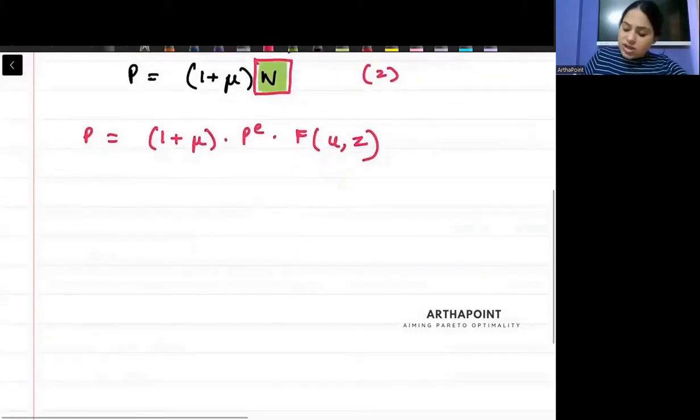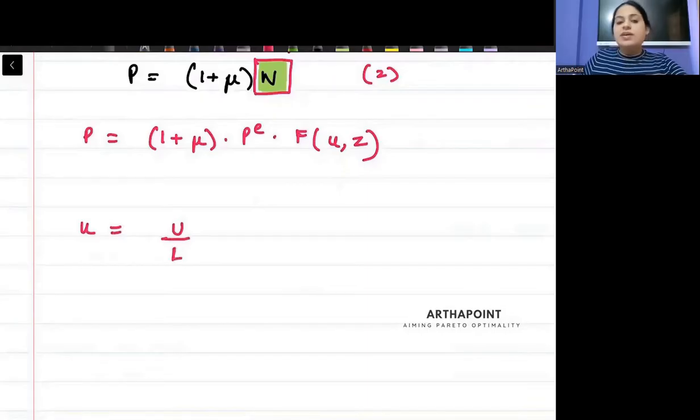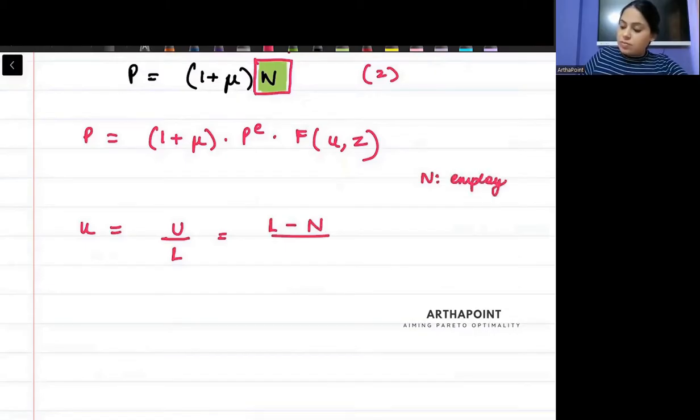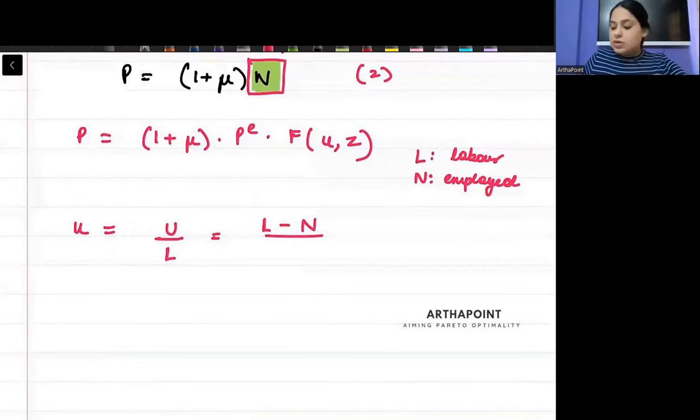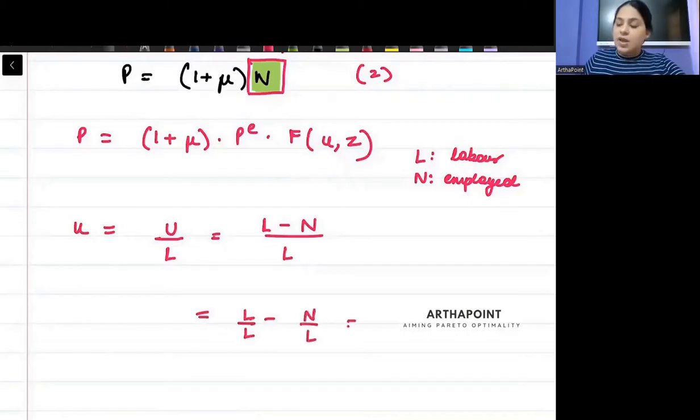Tell me something. What is unemployment rate? Unemployment rate is number of people unemployed divided by the total labor force. How many people are unemployed? Total labor force minus people employed. So let's say that N represents the number of people employed, and N with a bar represents the total labor force. So divided by L. Can I write this as L by L minus N by L? I can write this as 1 minus N by L.